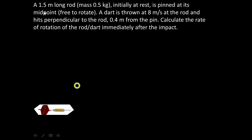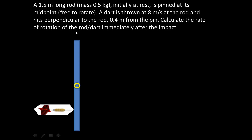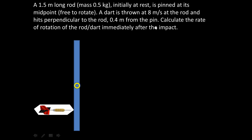One more example. A 1.5 meter long rod, mass 0.5 kilograms, initially at rest, is pinned at its midpoint and free to rotate about that. A dart is thrown at 8 meters per second at the rod and hits perpendicular to the rod, 0.4 meters from the pin. Calculate the rate of rotation of the dart-rod system immediately after impact.